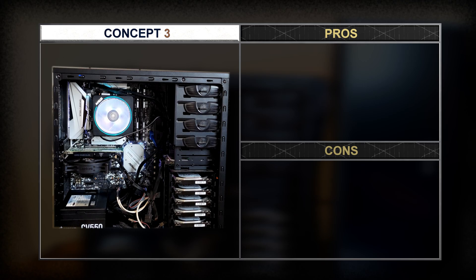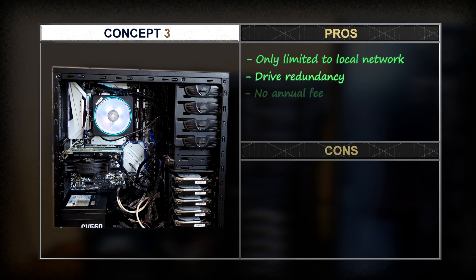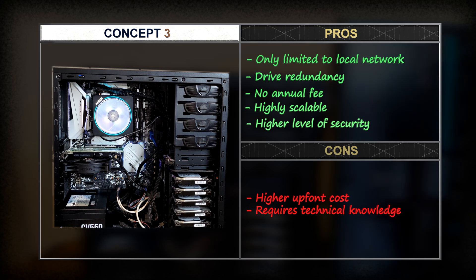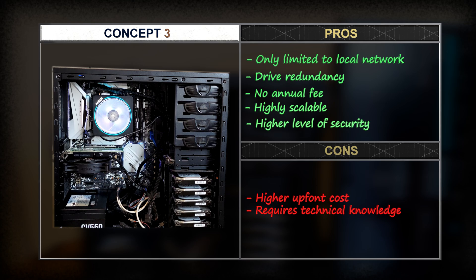I find that a NAS has more pros than cons. A NAS would only be limited to the speed of the local network, and 10 gig networking really isn't that expensive these days. There is drive failover baked into TrueNAS, so multiple drives can fail with no data loss. There's no annual fee, it's highly scalable and upgradable, and there is a higher level of security — not only is the data pool encrypted, but someone would need physical access to my network to steal or hold the data ransom. The only downsides are higher upfront costs and needing some technical knowledge to set up the NAS.